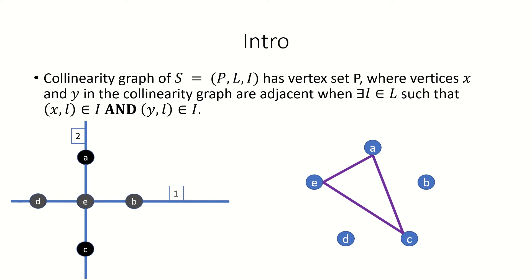Points B, D, and E are all incident to line 1 in the incident structure, so vertices B, D, and E are mutually adjacent in the collinearity graph. This is our result. Note that the set of points incident to a single line form a clique in the collinearity graph.